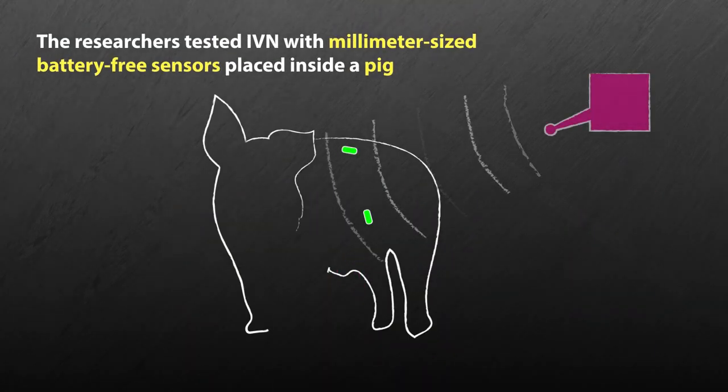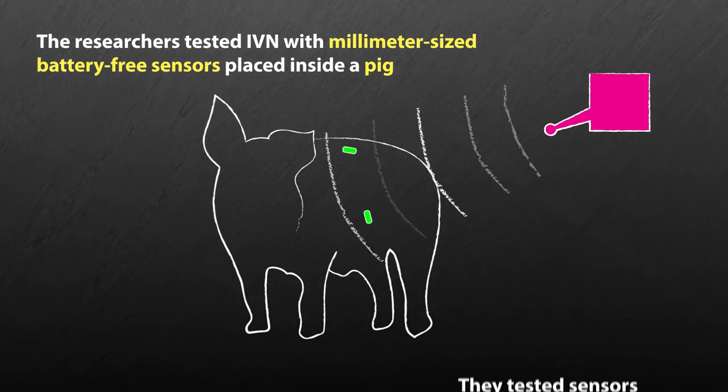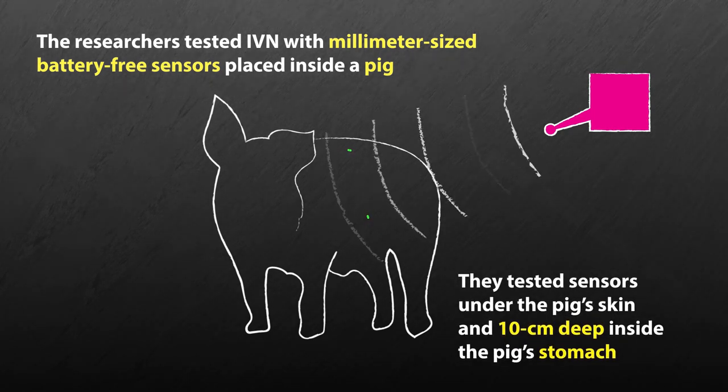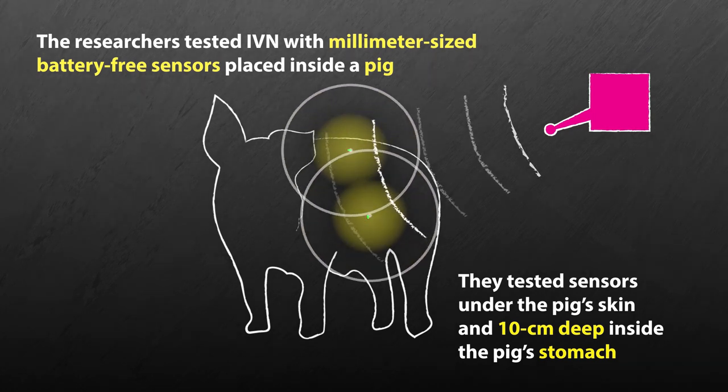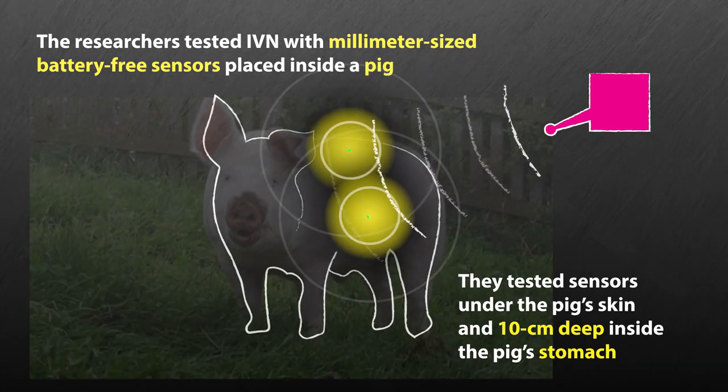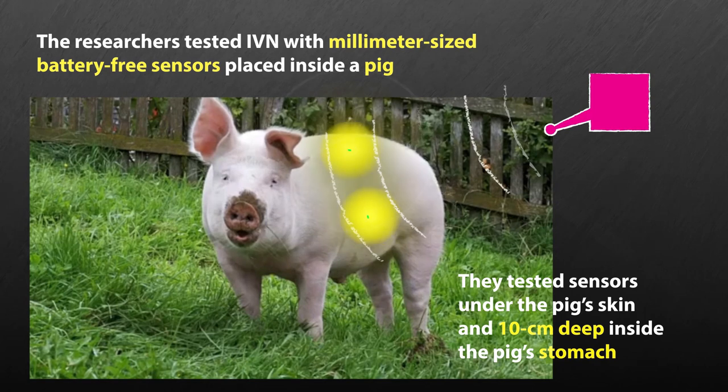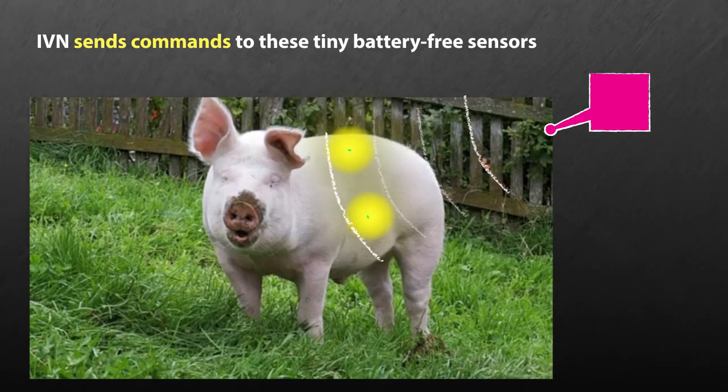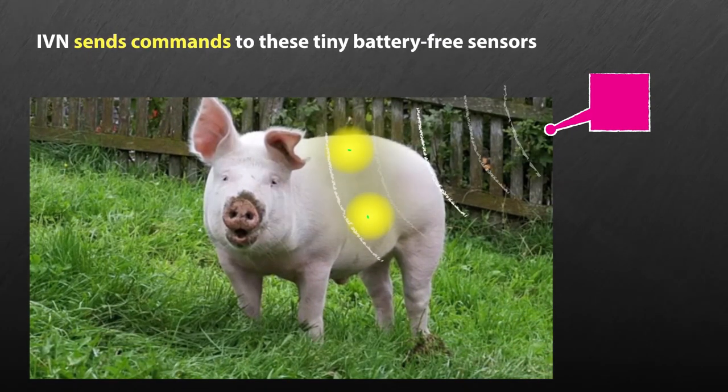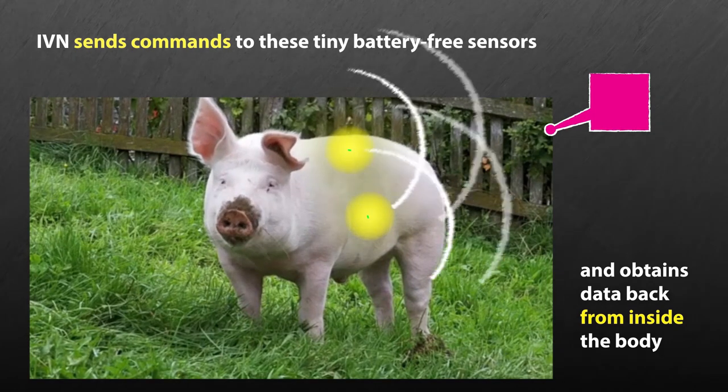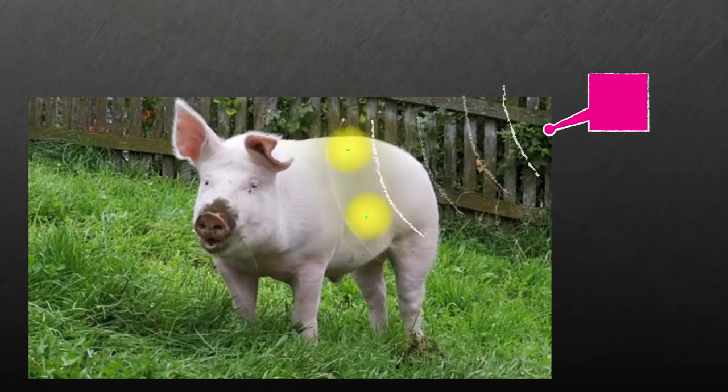The researchers have tested IVN with millimeter-sized, battery-free sensors placed inside a pig. They have shown how to power up and communicate with battery-free tags placed under the pig's skin and 10 centimeters deep inside the pig's stomach. IVN sends commands to these tiny, battery-free sensors and obtains data back from them from inside the body.